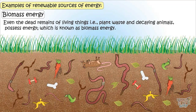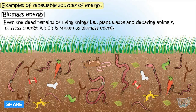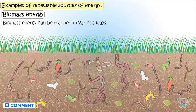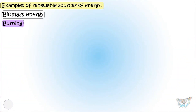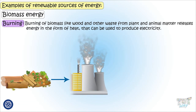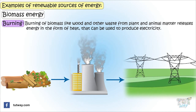Plants, waste, and dead decaying animals all have stored energy in them, which is known as bioenergy. This biomass energy can be trapped in various ways. Burning biomass like wood and other waste from plant matter releases energy in the form of heat, which can be used to produce electricity.